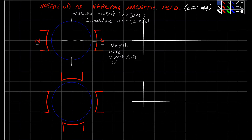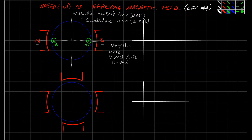We have the D-axis and Q-axis. The blue circle represents the path of the stator. Let's say this is a conductor in front of the north pole, and the return path of the loop is in front of the south pole. We label the conductor 'a' and its return path 'a-dash'. We have four positions for this diagram: position one, position two, position three, and position four.